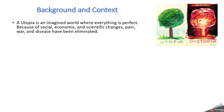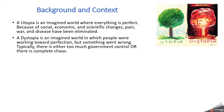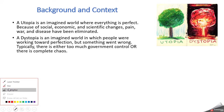A utopia, if you're not familiar with that term, is an imagined world where everything is perfect. Because of social, economic, and scientific changes, things like pain, war, and disease have been eliminated. This term comes from a book by Thomas More called Utopia, where he imagined what the perfect place would be like. A dystopia changes that beginning part of the word.